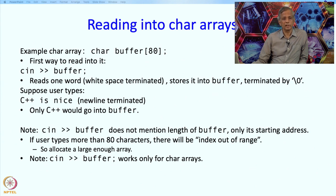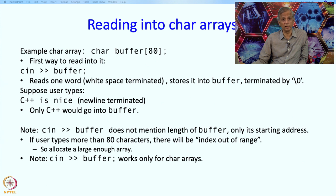'cin >> buffer' works only for character arrays. Buffer is technically a constant — a starting address — but C++ makes a special case for character arrays, interpreting it as: put whatever is read into this array starting from the 0th character. If buffer were an integer array, writing 'cin >> buffer' would cause a compiler error.